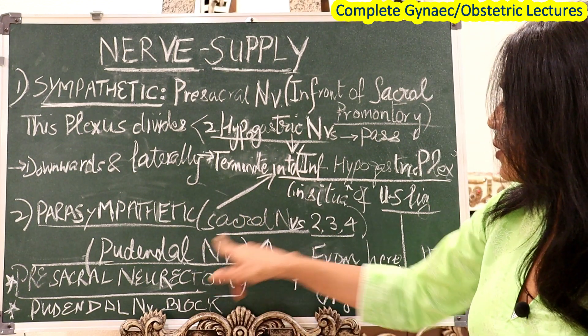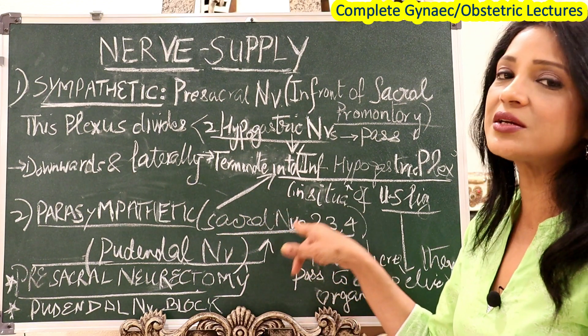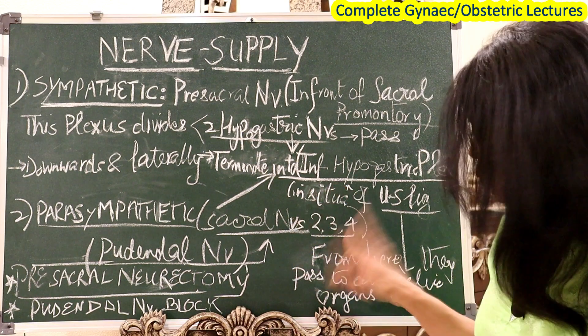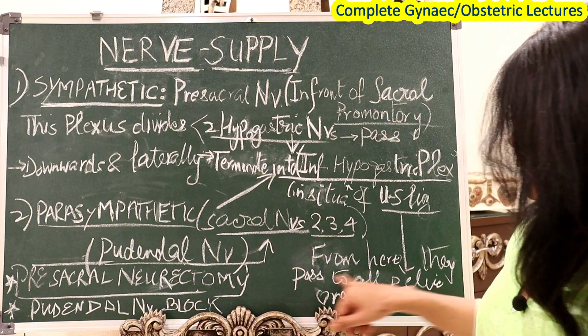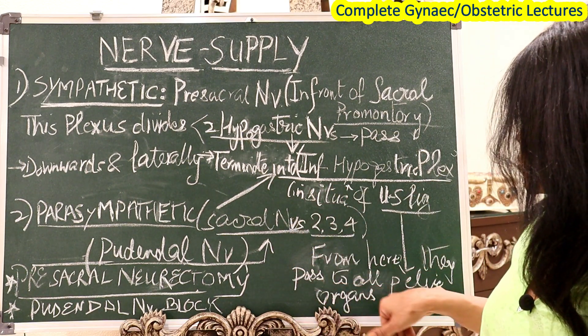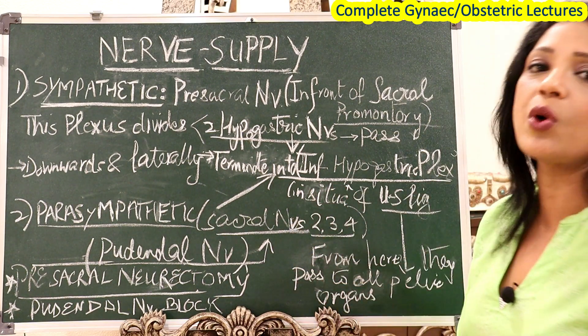The pudendal nerve comes from sacral fibers S2, S3, and S4, and from there passes to all the pelvic organs.